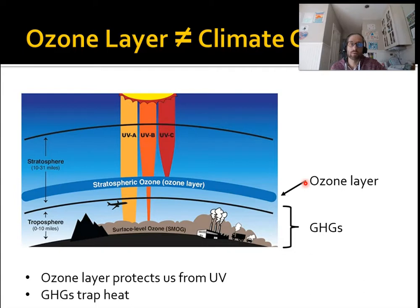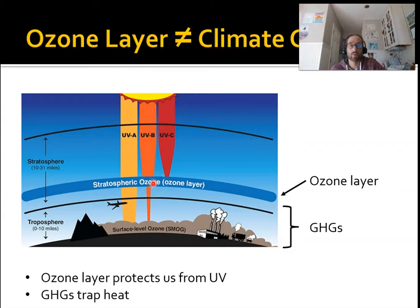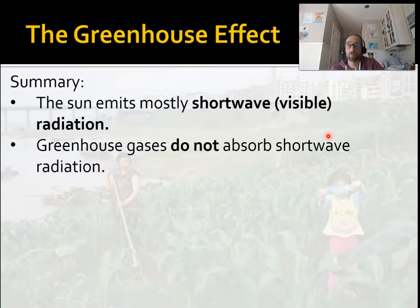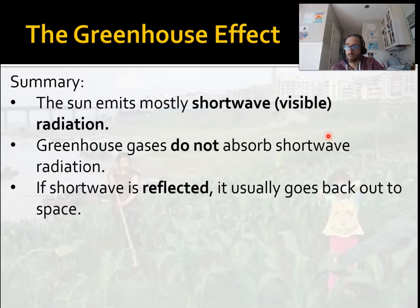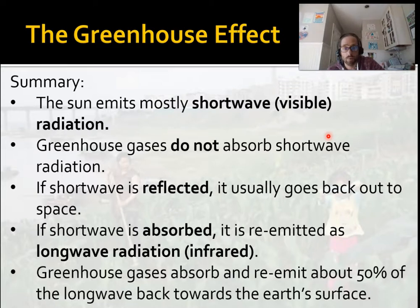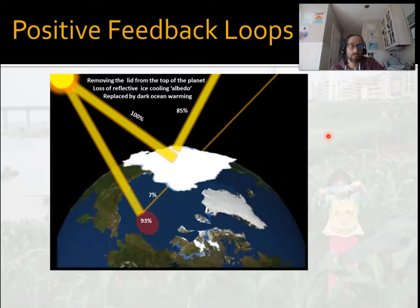I want to make sure you don't get confused here: the ozone layer has almost nothing to do with climate change. Ozone is the layer in the upper atmosphere — the stratosphere — that protects us from ultraviolet radiation. Ozone absorbs ultraviolet radiation, not longwave radiation. So the ozone layer does not have anything to do with climate change. To summarize: the sun emits mostly shortwave visible radiation; greenhouse gases do not absorb that. If reflected, it goes back to space. If absorbed, it's re-emitted as longwave, which greenhouse gases do absorb and re-emit — about 50% back toward the surface.